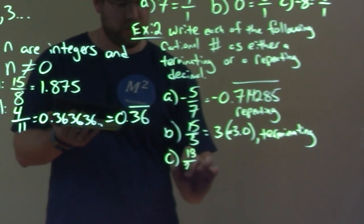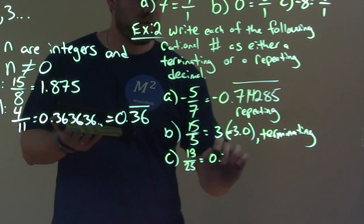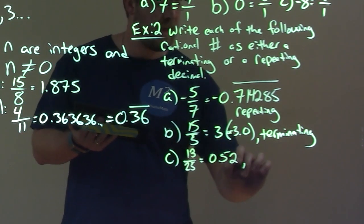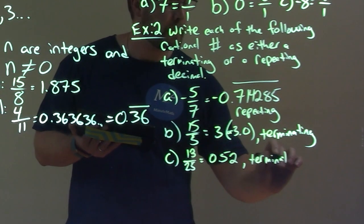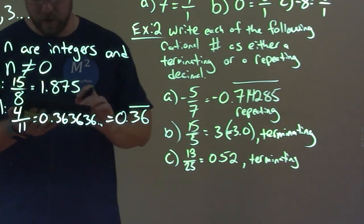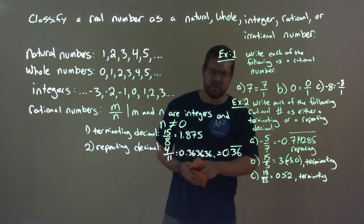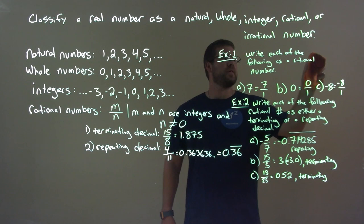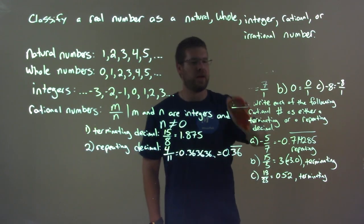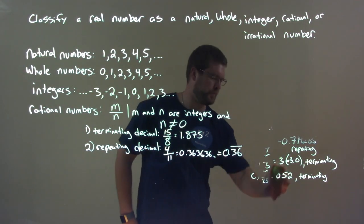13 over 25 is 0.52, and that is a terminating decimal as well. Now we're going to start the next section and talk about another category.